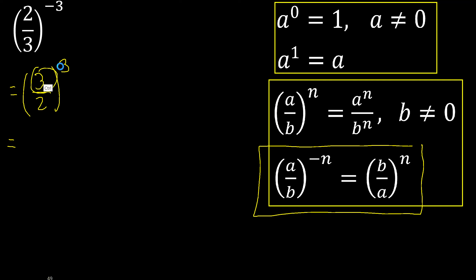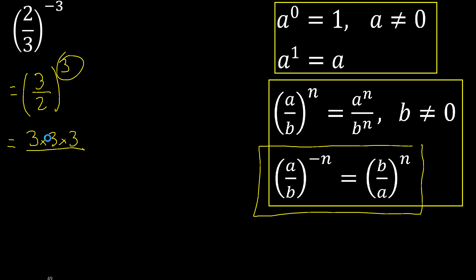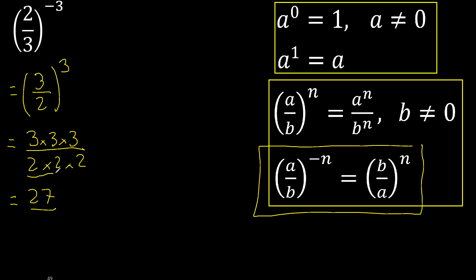3 multiplied 3 times: 1, 2, 3. 2 multiplied 3 times: 1, 2, 3. 3 multiplied by 3 is 9, and 9 multiplied by 3 is 27. 2 multiplied by 2 is 4, multiplied by 2 is 8.